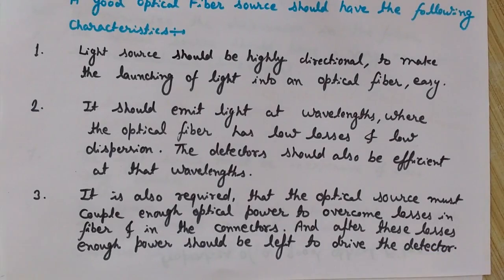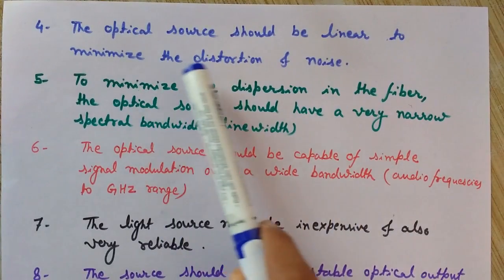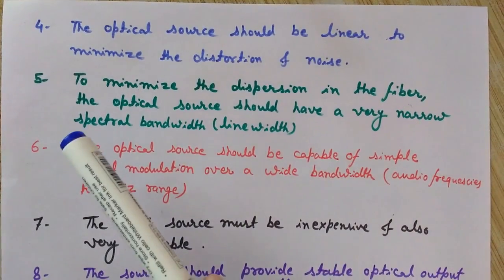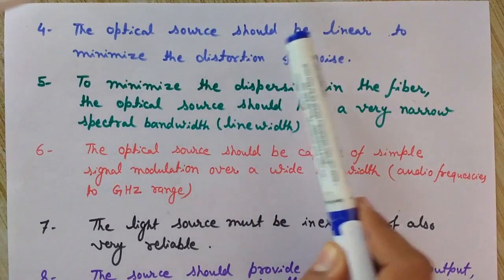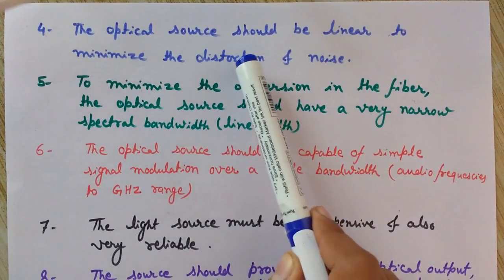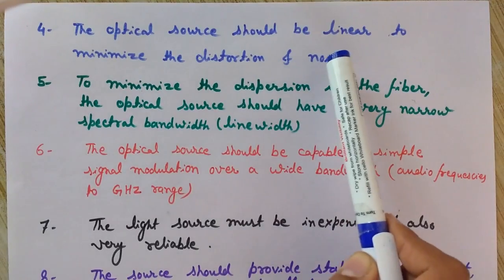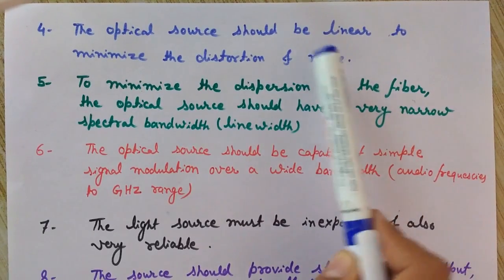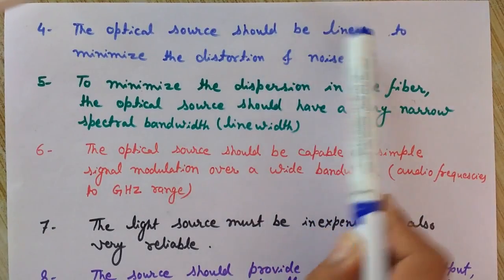The fourth property: the optical source should be linear to minimize distortion and noise. Linearity is an important factor to minimize distortion, and we also need low noise.